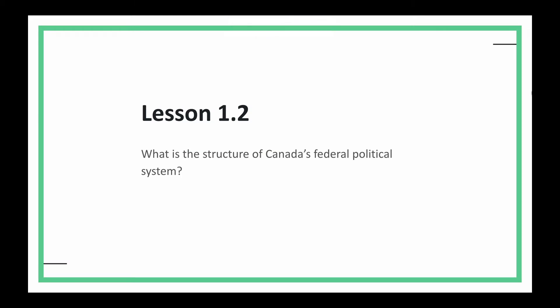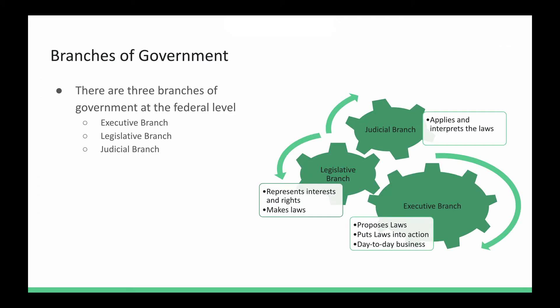It is Lesson 1.2: What is the structure of Canada's federal political system? Today we're going to be taking a look at a few things, and we're going to start with the branches of government. There are three branches in Canada's federal government: the executive branch, legislative branch, and the judicial branch.